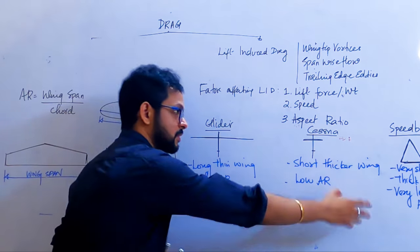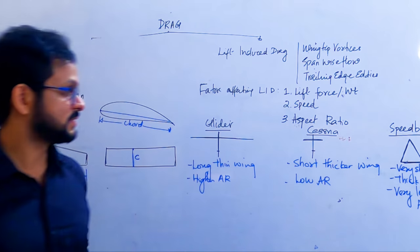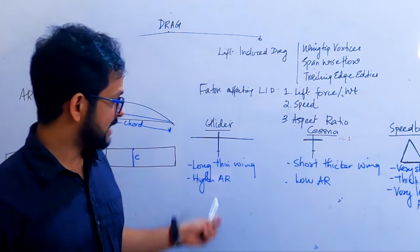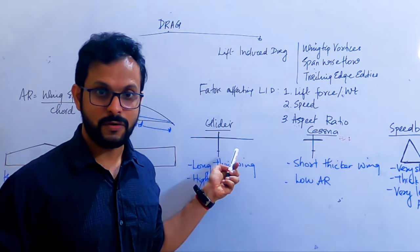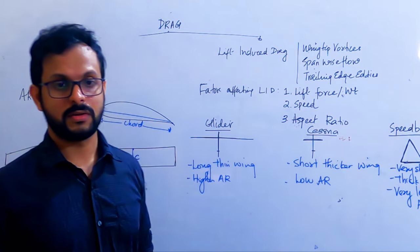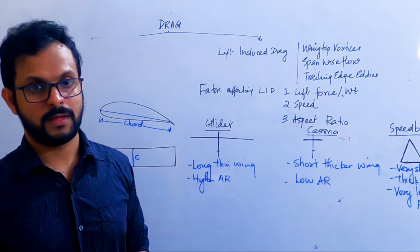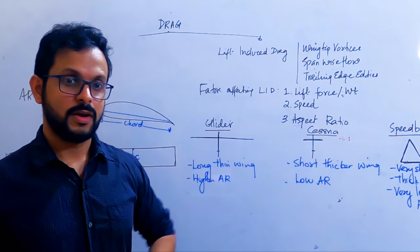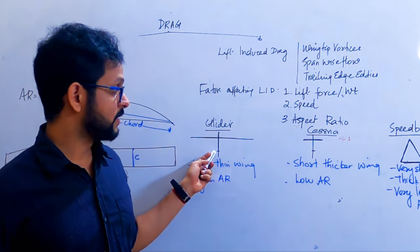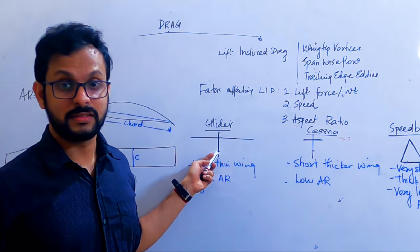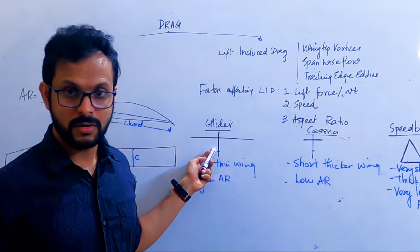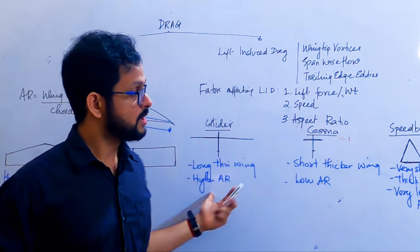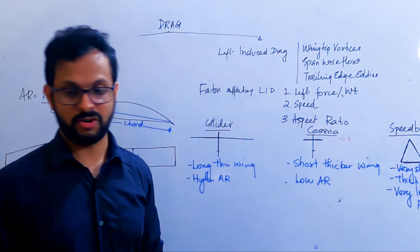Now look at these three aircraft — a glider, a Cessna, and a Concorde/speedbird. Can you relate aspect ratio to the purpose for which these aircraft are used? The glider is the slowest of the three and the speedbird is the fastest. The slowest one has a higher aspect ratio and the fastest one has a lower aspect ratio.